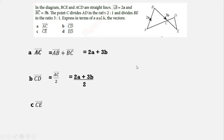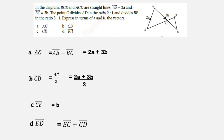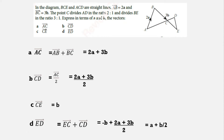Find vector CE. Since C divides BE in the ratio 3:1, CE = b. Find vector ED = EC + CD. EC = −b and CD = (2a + 3b)/2. So ED = −b + (2a + 3b)/2, which simplifies to a + b/2.